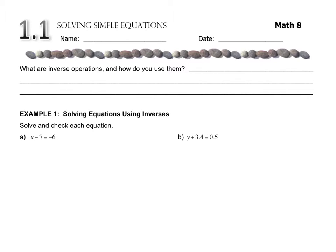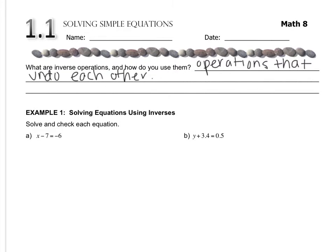The first thing that we need to talk about are what inverse operations are. An inverse operation is an operation that undoes another operation. There are operations that undo each other. Addition is the inverse of subtraction, and multiplication is the inverse of division. So you would use one if you want to get rid of the other.